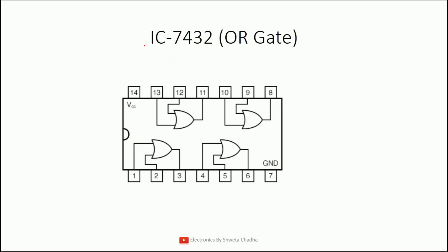Next is the OR gate, IC number 7432, a two-input OR gate. All the pin numbers are exactly the same as explained for the AND gate — starting from the notch, pin 1 to 7, then anti-clockwise 8 to 14, where pin 7 is ground and pin 14 is VCC. Gate assignments: pins 1 and 2 input, 3 output; pins 4 and 5 input, 6 output; pins 10 and 9 input, 8 output; pins 13 and 12 input, 11 output. With a single IC we can design a total of 4 OR gates.